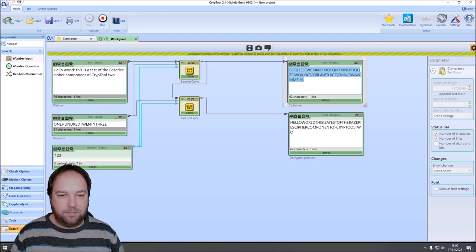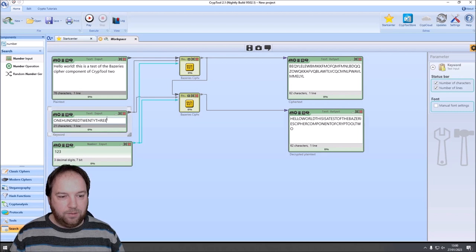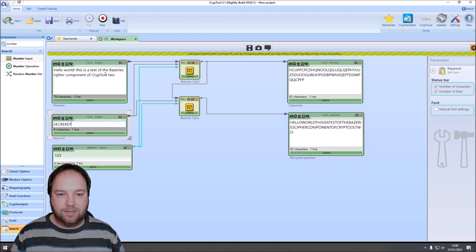Now we can change the keyword. For instance to secret key. And we will obtain a different cipher text. Since the Bazeries cipher component here allows to use a different keyword that is not based on the number key, I also added another option that the original cipher didn't have. And that is to change the alphabet.